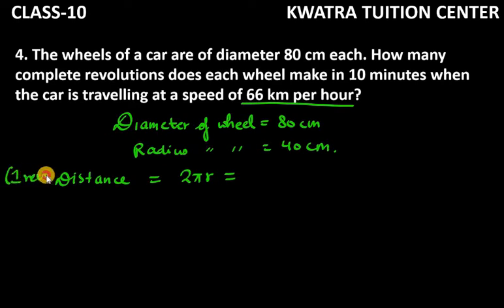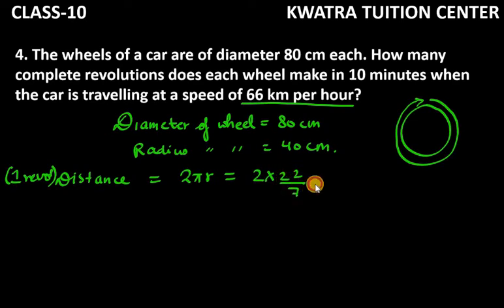Circumference is equal to our distance covered by a wheel in one revolution. So, 2πr is equal to our circle. If we are talking about one revolution, 2 into 22 over 7 into r. r is equal to our 40.